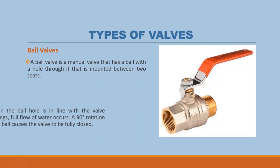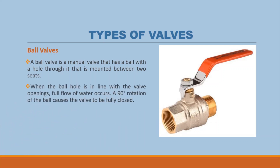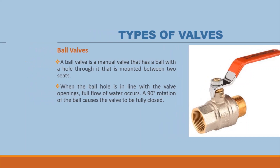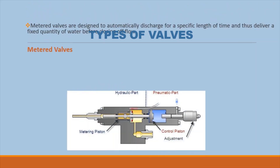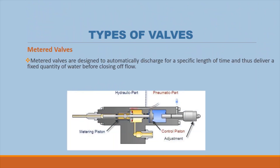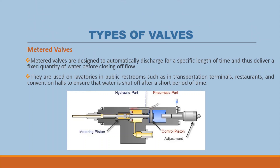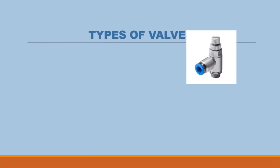Ball valves: a ball valve is a manual valve that has a ball with a hole through it, mounted between two seats. When the ball hole is in line with the valve openings, full flow of water occurs. A 90-degree rotation of the ball causes the valve to be fully closed. Metered valves are designed to automatically discharge for a specific length of time, delivering a fixed quantity of water before closing. They are used on lavatories in public restrooms such as transportation terminals, restaurants, and convention halls to ensure water is shut off after a short period.